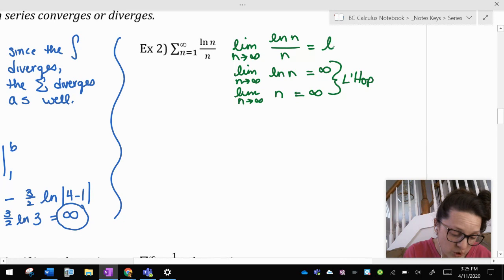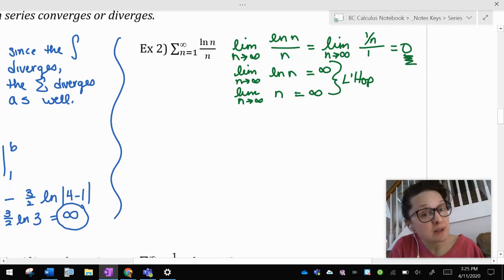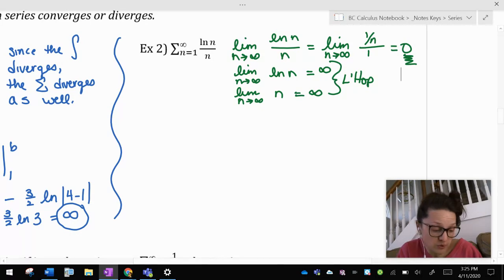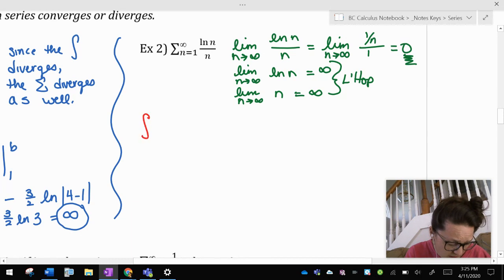So this original limit is equal to the limit of the derivative of the top over the derivative of the bottom, which would be 1 over n over 1. And as n approaches infinity, that does go to 0. So by the nth term test, this thing has a chance at converging. I don't know if it converges or not, though, so I've got to figure this one out.